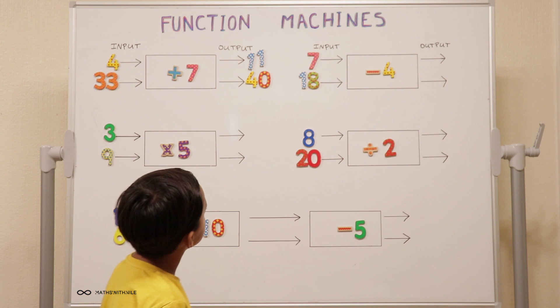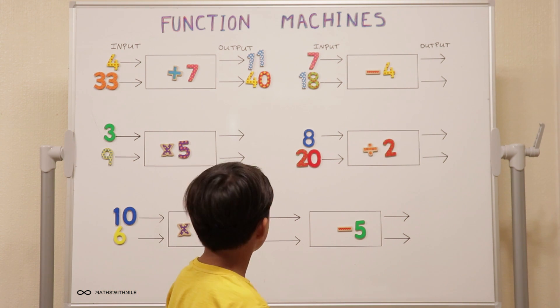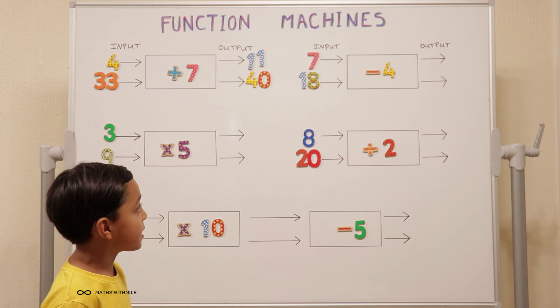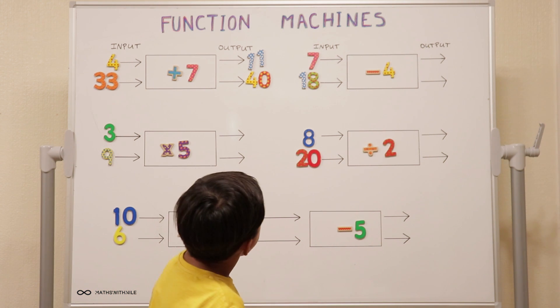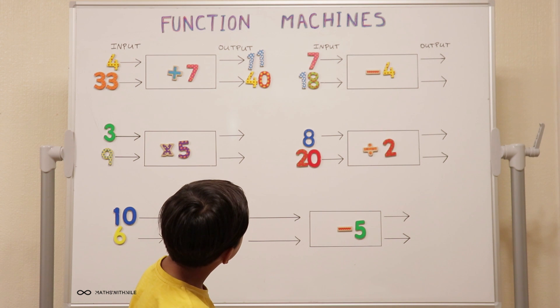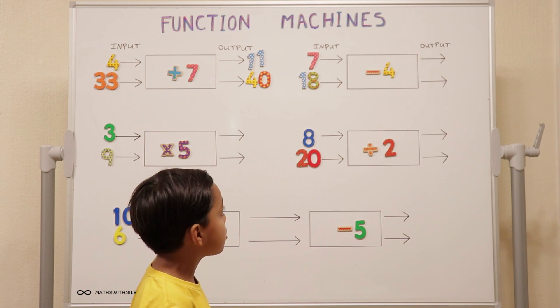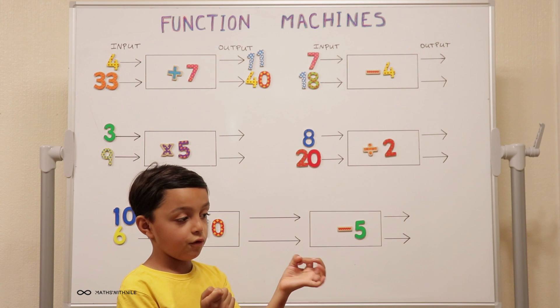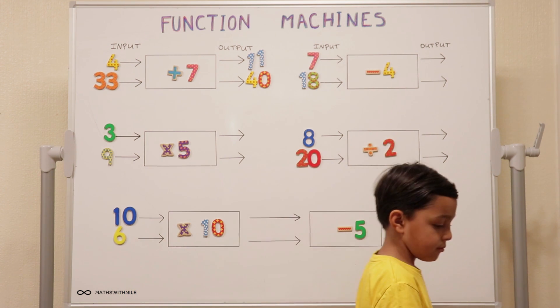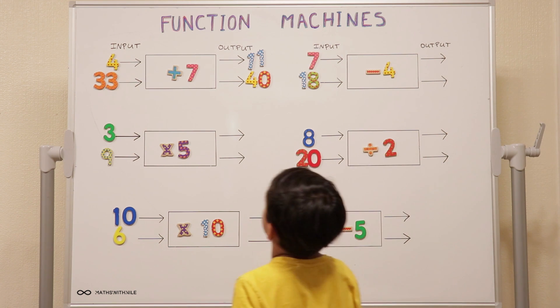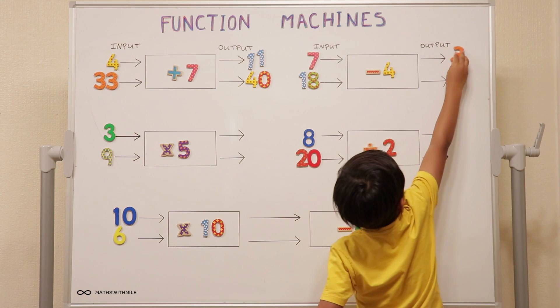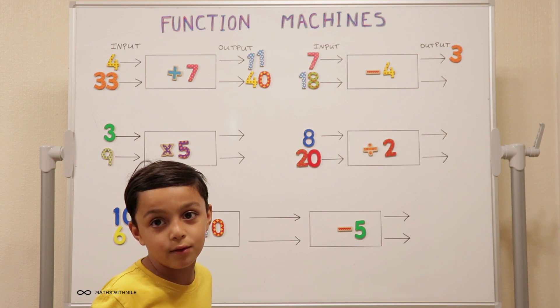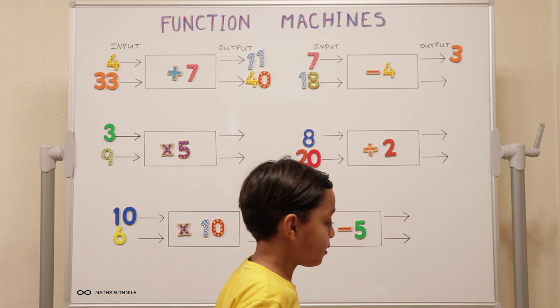Let's look at the second function machine. What are you going to do for that one? It's seven take away four, so it's the opposite. So the rule is take away four for that function machine. Work it out and let's see what outputs you get. Seven take away four, three. So when the input is seven, the output is three.